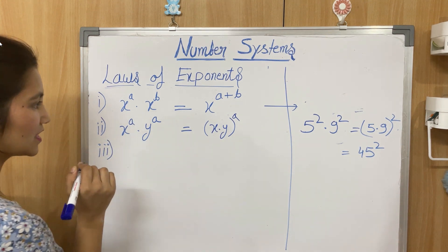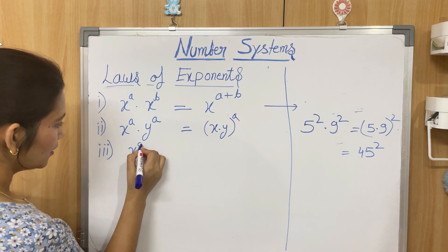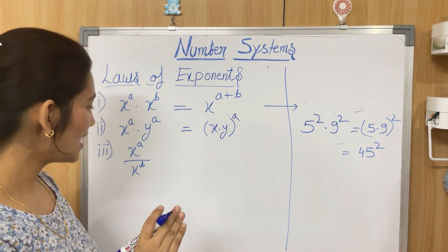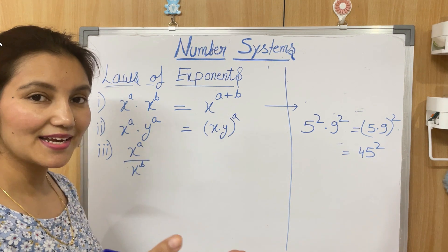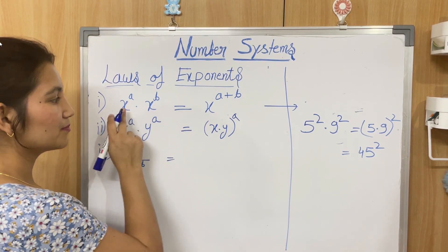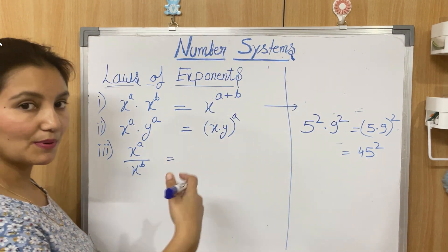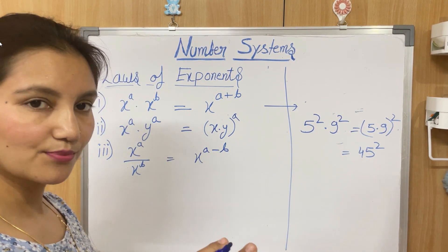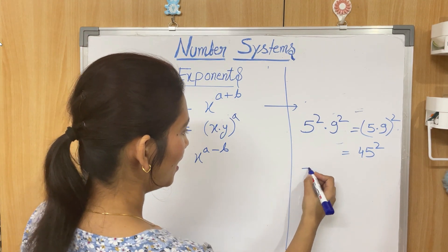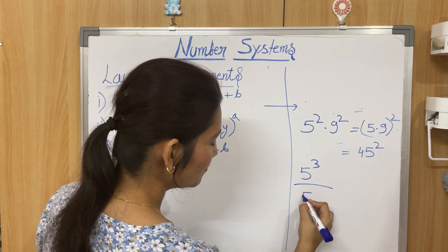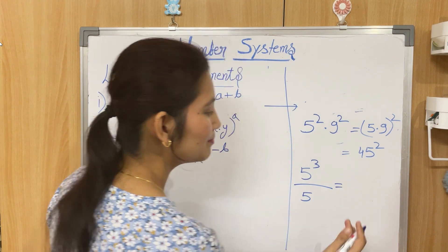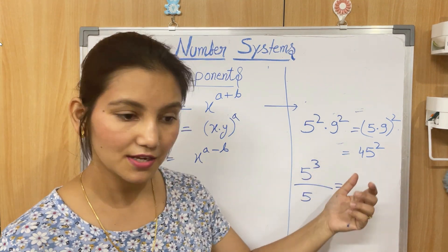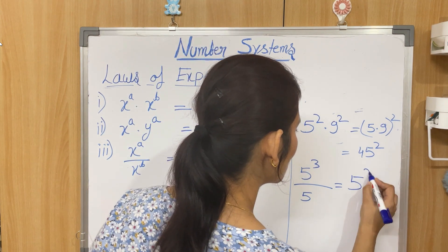The third law of exponents: if two numbers are getting divided — x^a ÷ x^b — the bases are the same but they have different powers. When multiplying, powers add up; when dividing, powers get subtracted: x^(a−b). For example, 5³ ÷ 5¹ = 5^(3−1) = 5². This is the third law of exponents.